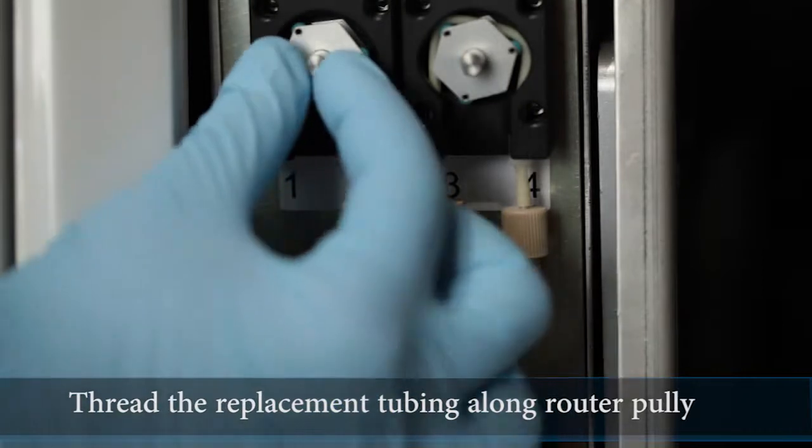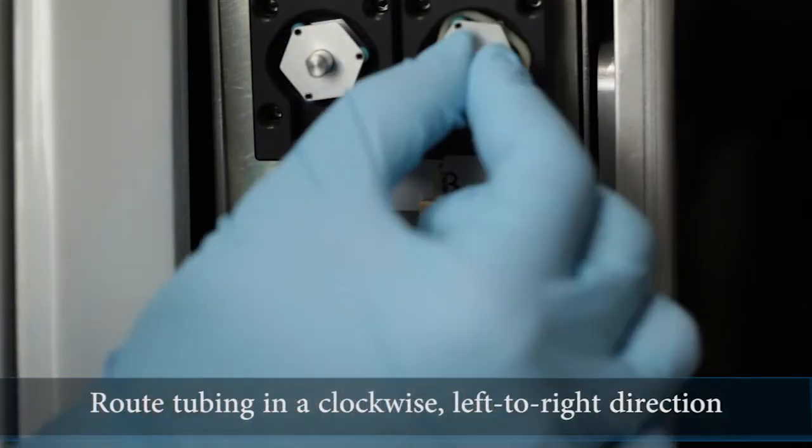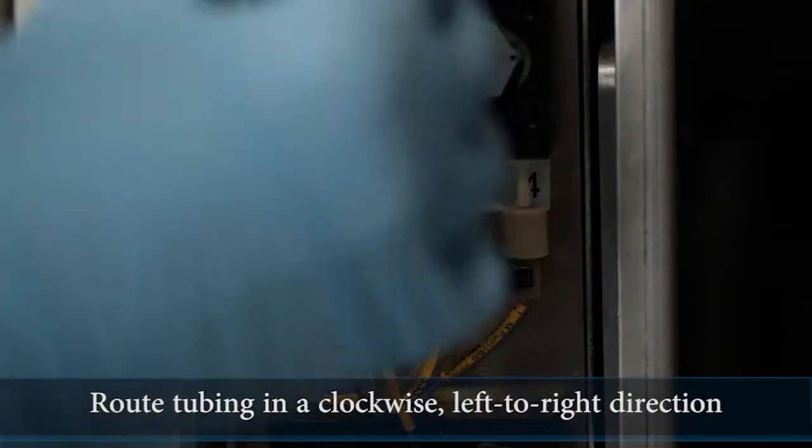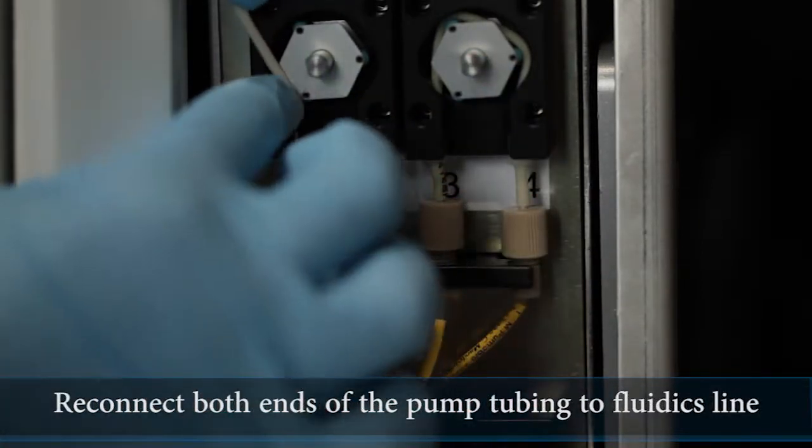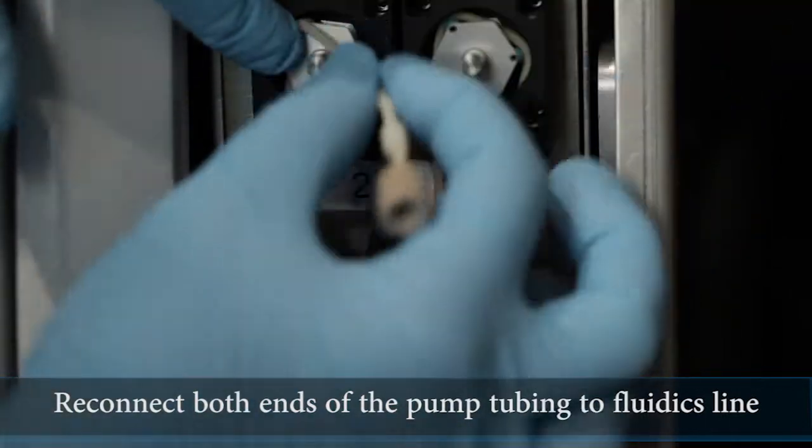Thread the replacement tubing along the router pulley, and route the tubing in a clockwise left to right direction to seat and position the replacement tubing. Reconnect both ends of the pump tubing to the corresponding fluidics line, making certain to match each end of the pump tubing to the correct line to prevent a malfunction.